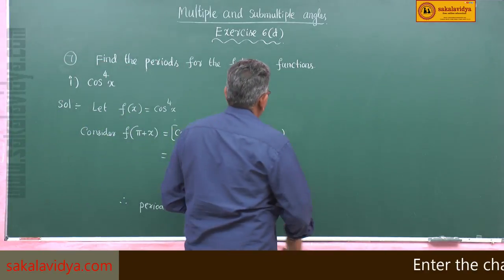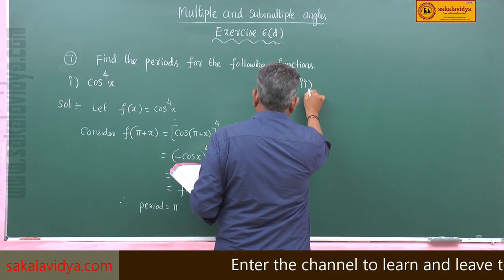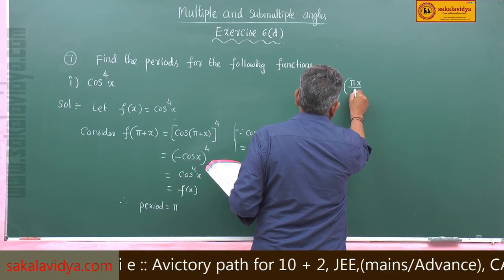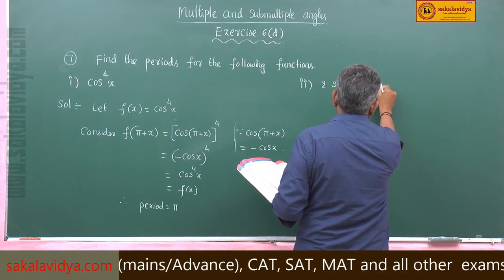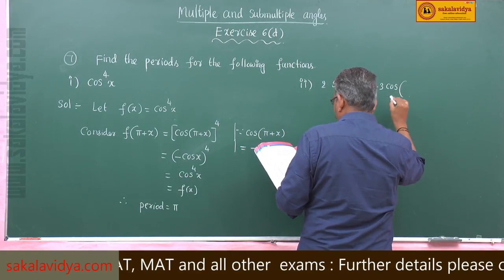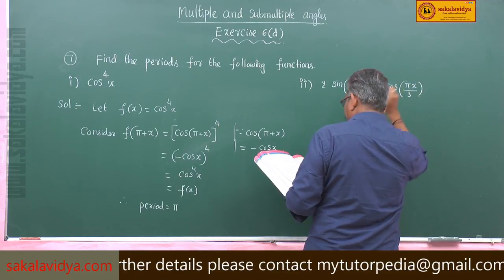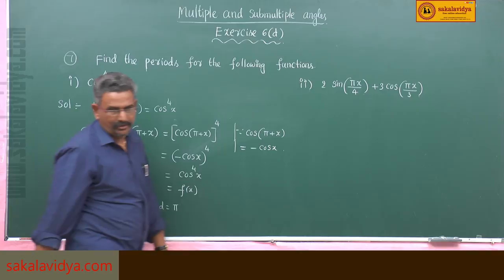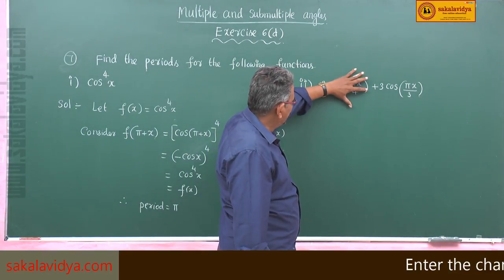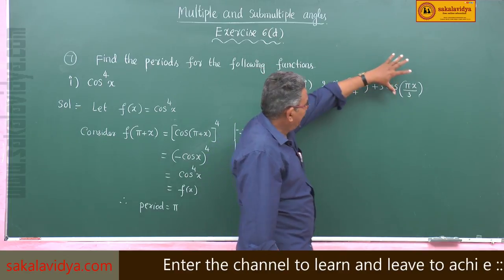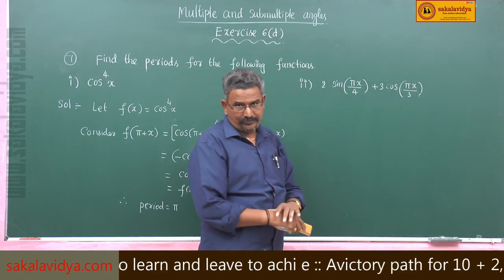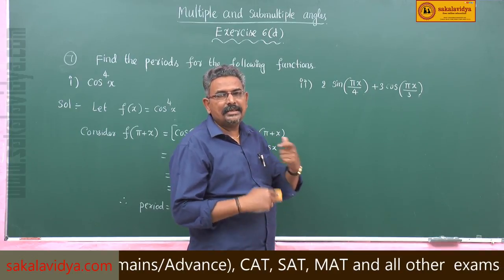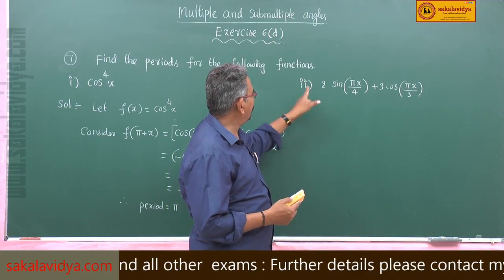Second one: 2 sin of pi x by 4 plus 3 cos of pi x by 3. To find the period of this function, first let us find the period of sin of pi x by 4 — call it p1 — and the period of cos of pi x by 3 — call it p2 — separately. Then the LCM of p1 and p2 gives us the period of the given function.